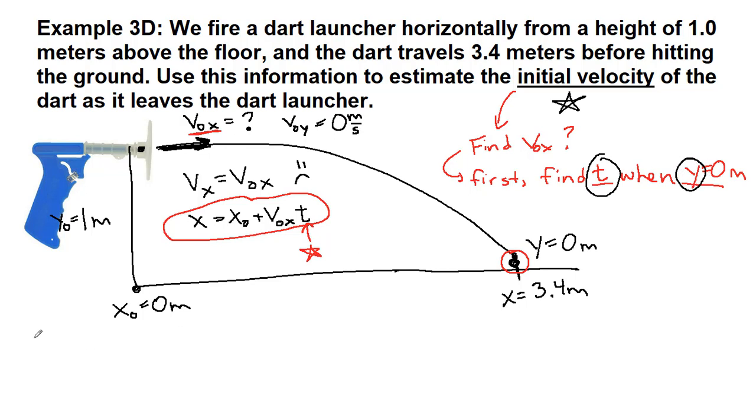So we're going to use the yt equation. So let's write out the yt equation. Y equals y0 plus v0y t minus 1 half gt squared. The final y is 0. The initial y is 1 plus, by definition when we hit this or we started this horizontally, the initial velocity in the y direction is 0 minus 1 half times 9.8 times t squared. And this is 1.0.